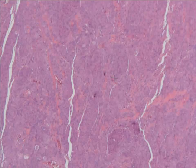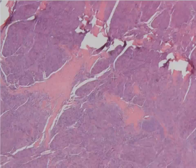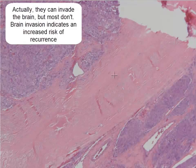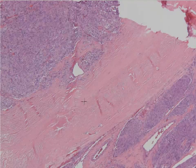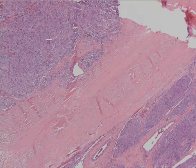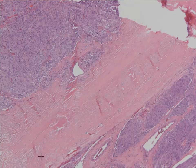This tumor doesn't actually invade the brain — it just kind of pushes into it. This thick pink area right here is the dura, and you can see that this tumor is associated with the dura and extending from it in this case. So this is a meningioma with a nice dural component here.